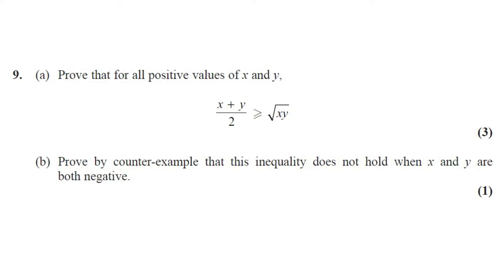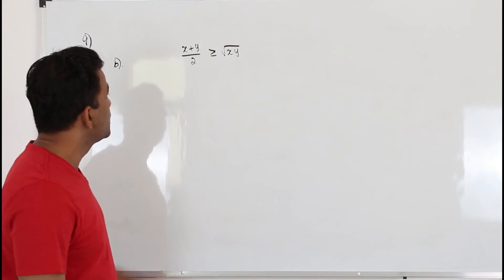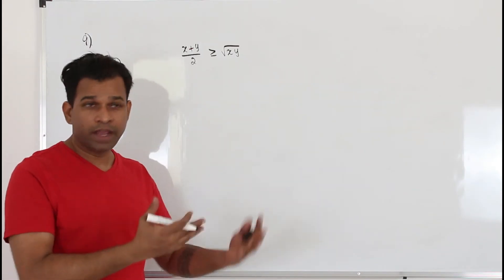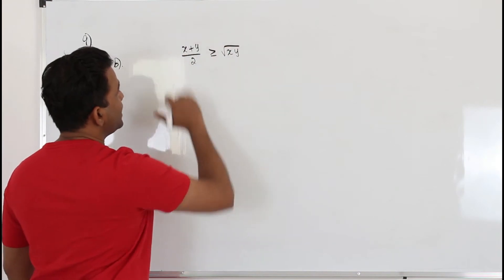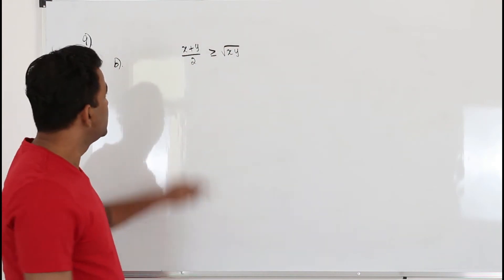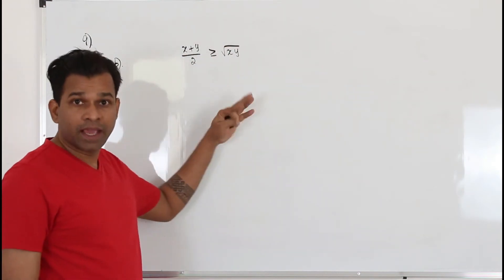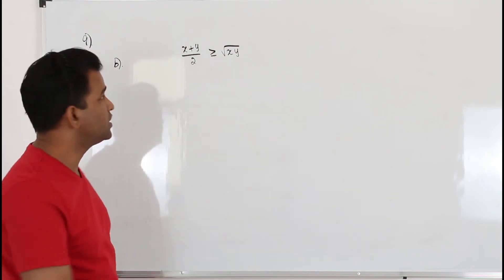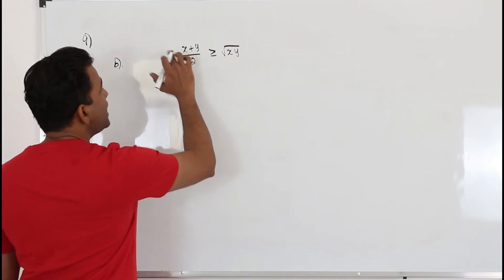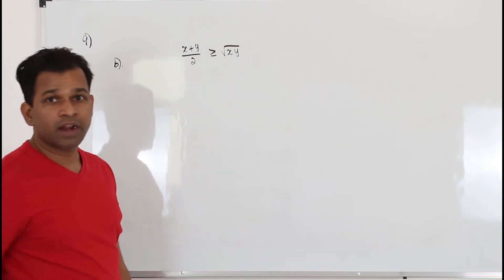Part B. Prove by counter example that this inequality does not hold when x and y are both negative. This question carries one mark. Here we need to use one counter example to prove that this inequality is not true when both x and y are negative. That's what the question says.